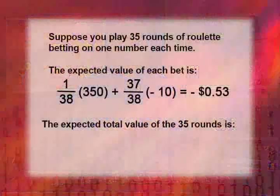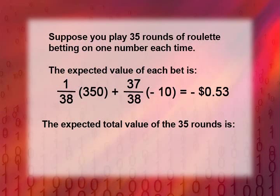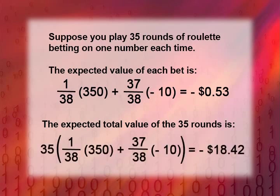Now I want to show you some surprising things about expected value. Suppose you play this roulette game not just once, but 35 times — making a $10 bet each round and repeating this 35 times. We know the expected value of playing 35 times: on average we lose 53 cents per bet, there are 35 rounds, so our expected loss is $18.42. That's the expected loss over 35 rounds of betting.